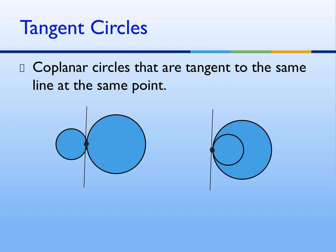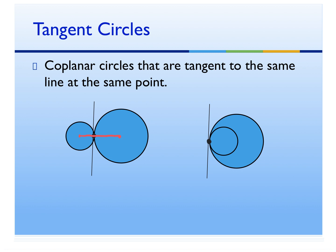Let's determine whether it's an internal versus external common tangent. Draw the two centers and draw the line connecting them. Does it cross over the tangent line? Yes — so we would say it's internal. Do the same for the second one. Centers are here and here — draw your line. Do the lines cross? No. So what do we call it? External.